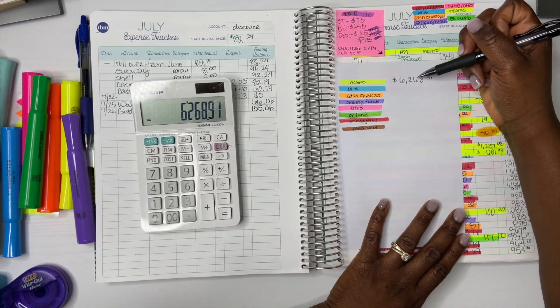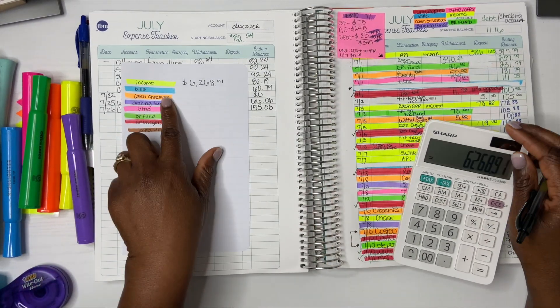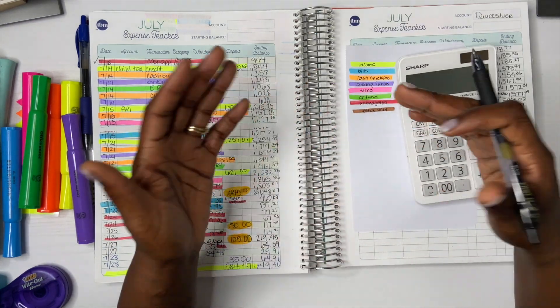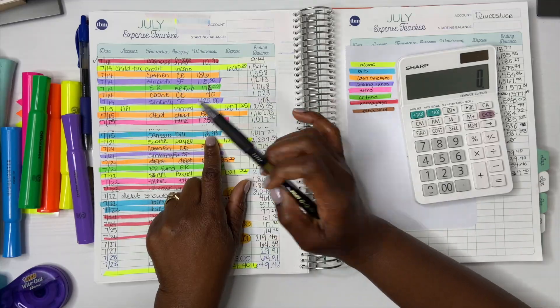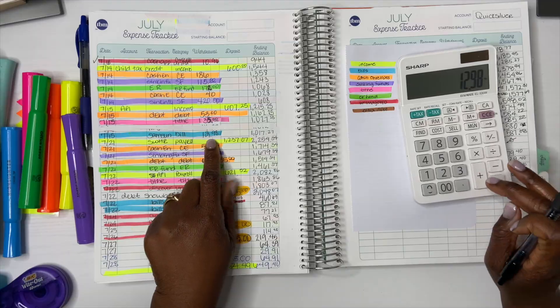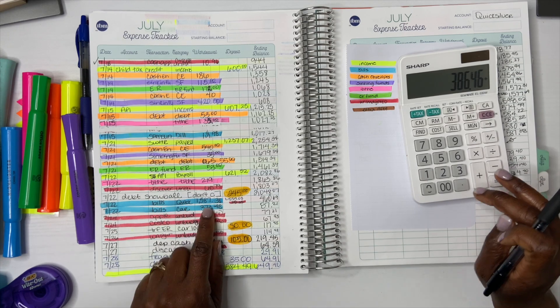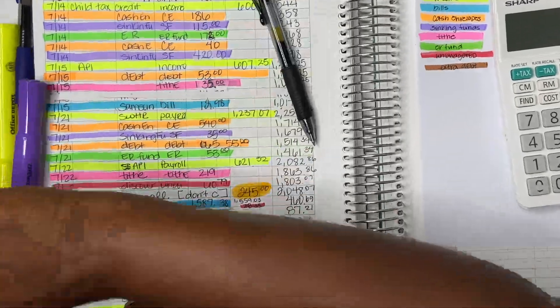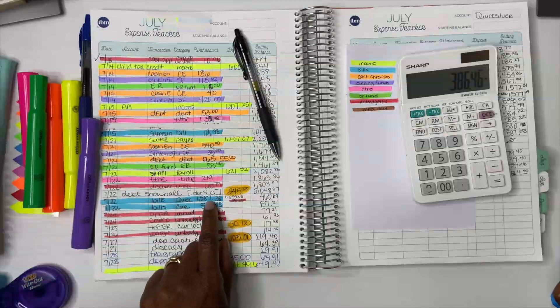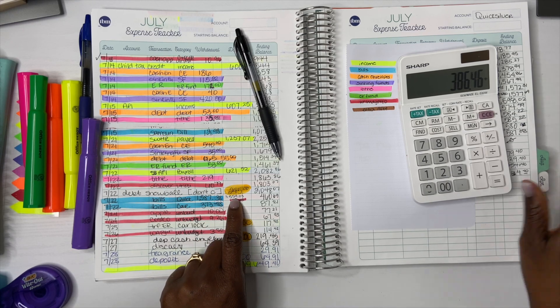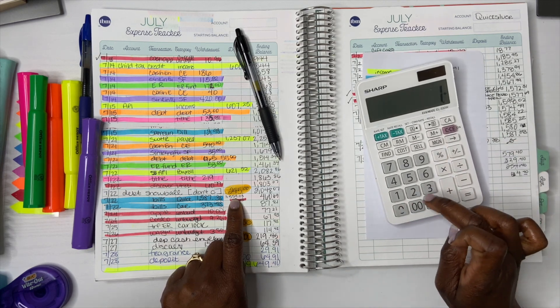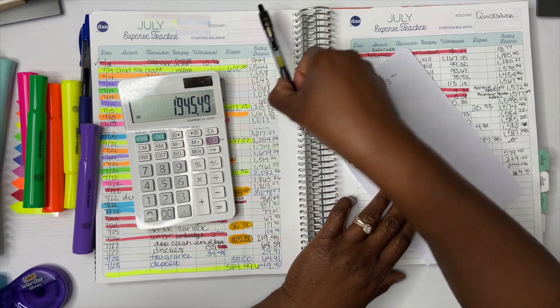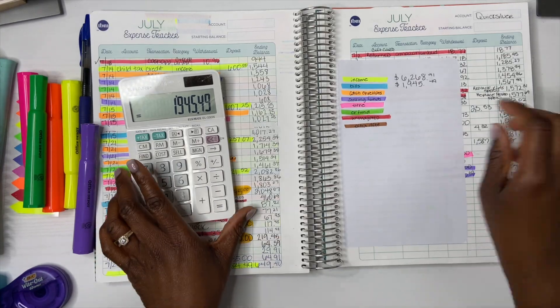Income, $6,268.91. All right, now we're going to add up all the bills. So usually you guys know that I like to put our bills on our credit card, so this should be easy. The only thing that comes out the checking account is Samsung which is $12.98, my car note $373.48, and I put everything on the credit card. As you can see, I put some numbers right here so $28.35 of this amount is unbudgeted. So our bills came up to $1,559.03.